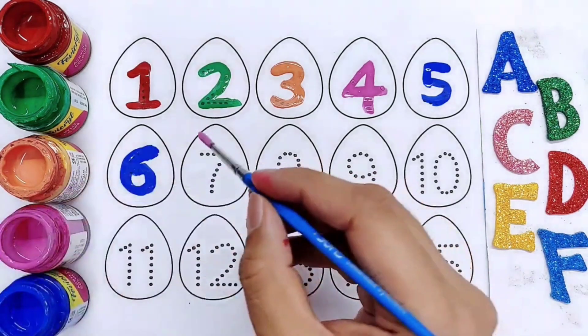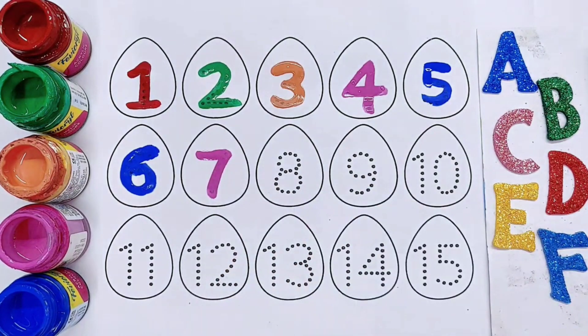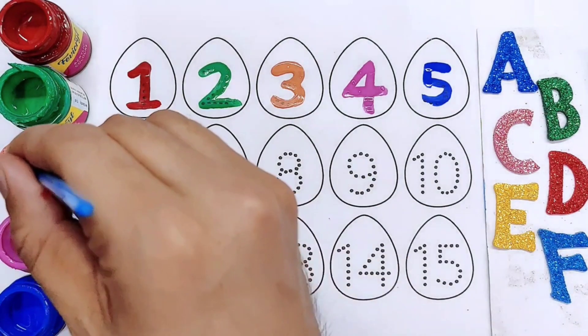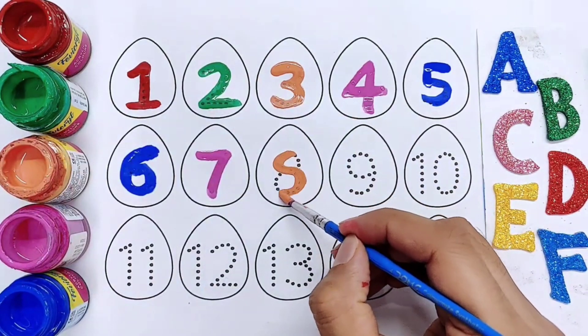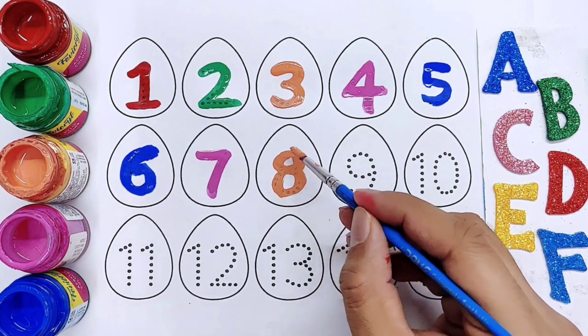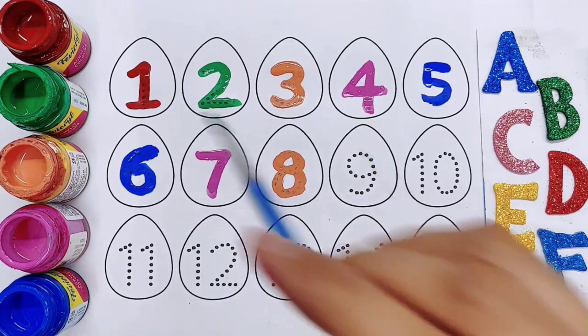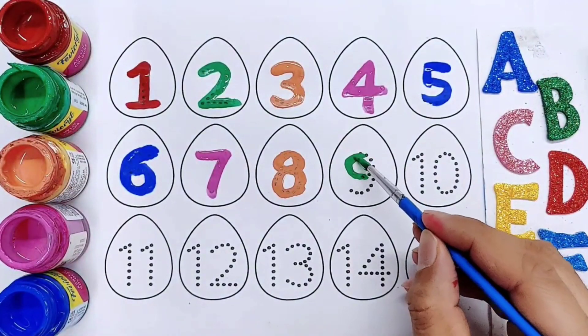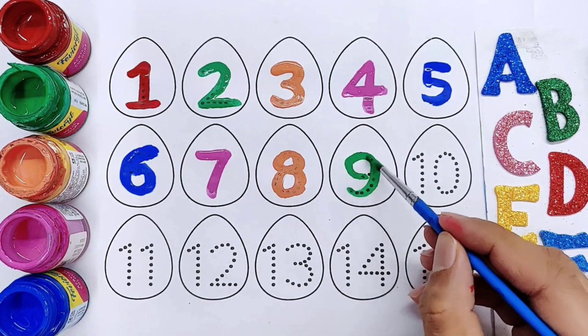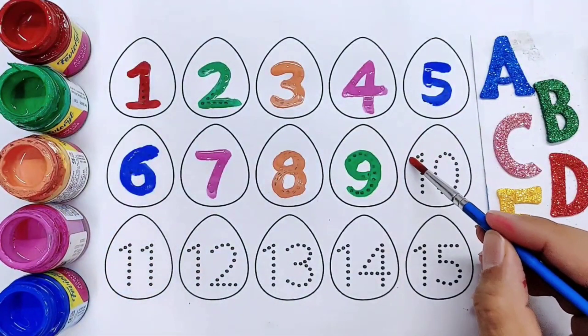Seven, it's seven. Eight, number eight. Nine, it's nine. Ten, number ten.